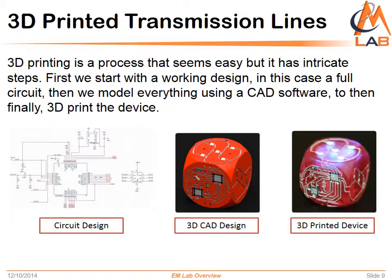First, take the example on your left — it's a simple circuit with a microchip and some components. We need to rethink the way we place our vias and our components and create a full simulation using CAD software. The simulation will have all the details that encompass a finished product or finished device. Then when the CAD is complete, we move on to dealing with the actual print.